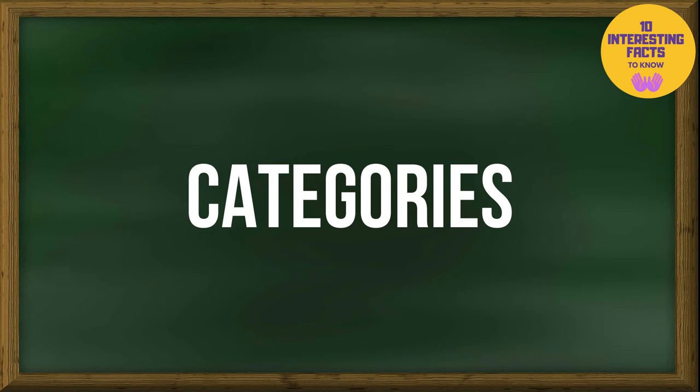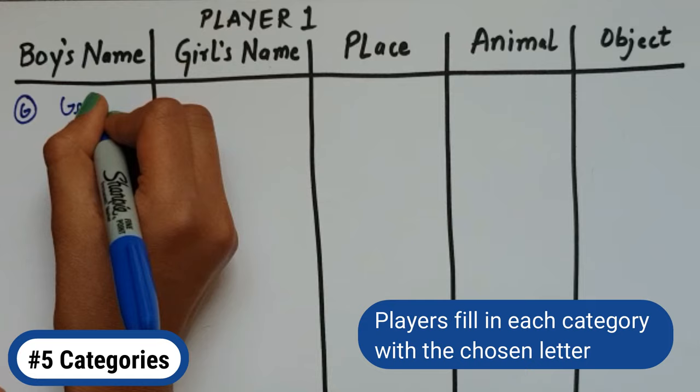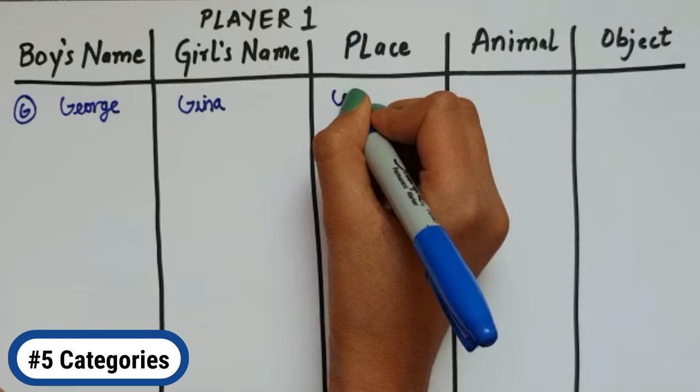Categories! Think about four to five categories such as boy's name, girl's name, place, animal, object, and write them on a piece of paper. One player chooses a letter and then all players have to write a word in each category starting with that letter. Player one picks the letter G for the first round.